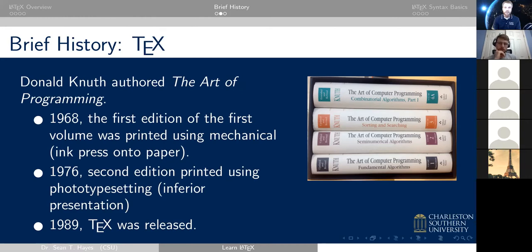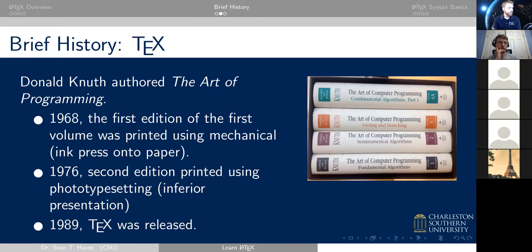Knuth spent a long time thinking about font systems — how to arrange fonts in the most aesthetically pleasing, readable, and legible way, and how to handle mathematical formulas. He looked at old mechanical fonts he considered superior and applied mathematical formulas to the curves and shapes of letters. He created a computer-based typesetting system that the rest of the volumes of 'The Art of Computer Programming' were subsequently published in.